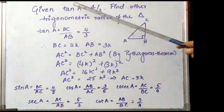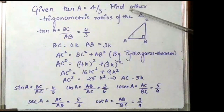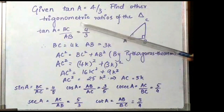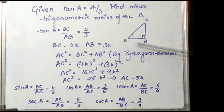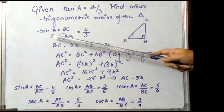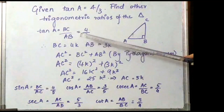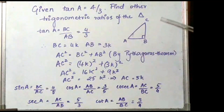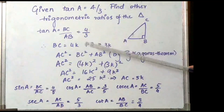The first problem is: tan A is 4 by 3, find the other trigonometric ratios of the triangle. We construct a triangle ABC with angle B equal to 90 degrees. Now tan A is BC by AB, which is the opposite by the adjacent, which is 4 by 3.